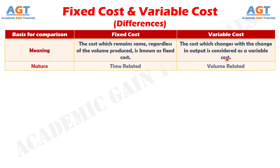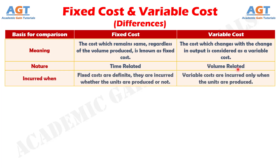Number two: the fixed cost is time related, that is, it remains constant over a period, unlike variable cost which is volume related, that is, it changes with the change in volume. Number three: fixed cost is definite — it will incur even when no units are produced. Conversely, variable cost is not definite; it will incur only when the enterprise does some production.